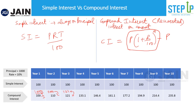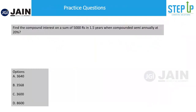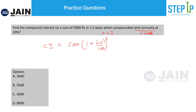Now let's take a simple example to understand compound interest. Find the compound interest on a sum of 5,000 rupees in 1.5 years when compounded semi-annually. Semi-annually means every six months it's getting compounded. In 1.5 years that means three cycles, so N = 3. Using the formula: CI = P(1 + R/100)^N − P, with P = 5,000, rate = 20%, N = 3. You can calculate this and get your answer.